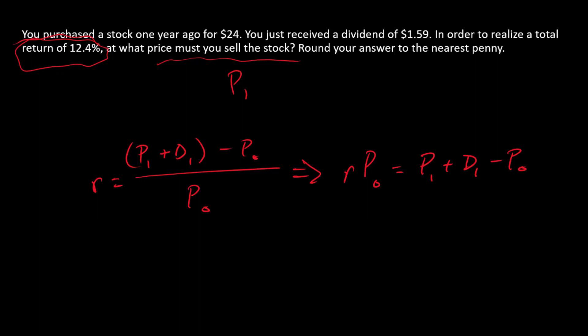And second, I want to isolate this number here. So I can do this by saying P0 plus R times P0 minus D1 equals P1.